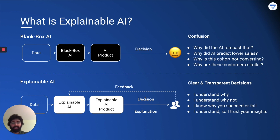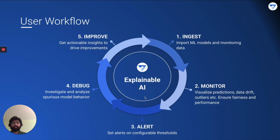As you can see on the slide, you have a framework where data goes into a black box AI, which powers an AI product and a decision is made. Now there are multiple questions that can be asked here. What explainable AI does, as you can see in the bottom half of the slide, is give you a feedback loop. So instead of a black box AI model, you have an explainable AI system which enables a decision that comes with an explanation, completing the feedback loop. Now you know that this decision was made, and you also know why it was made.